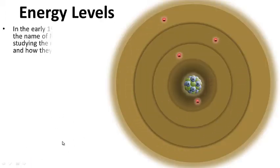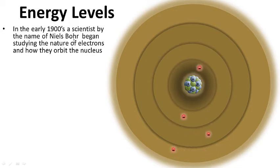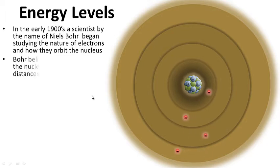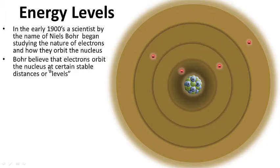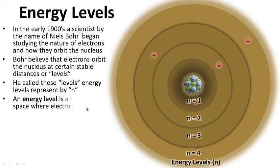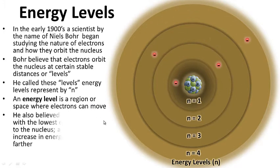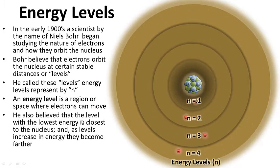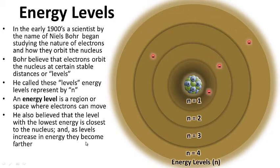So, energy levels. In the early 1900s, a scientist by the name of Niels Bohr began studying the nature of electrons and how they orbit the nucleus. Bohr believed that electrons orbit the nucleus at certain stable distances or levels. He called these levels energy levels, represented by N. An energy level is a region or space where electrons can move. He also believed that the level with the lowest energy, N equals 1, is closest to the nucleus, and as levels increase in energy, they become farther.